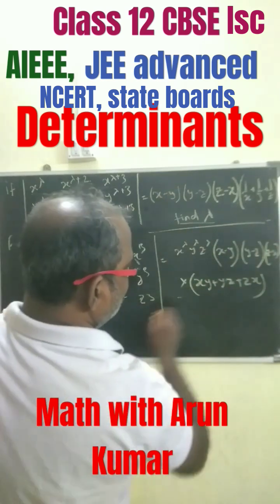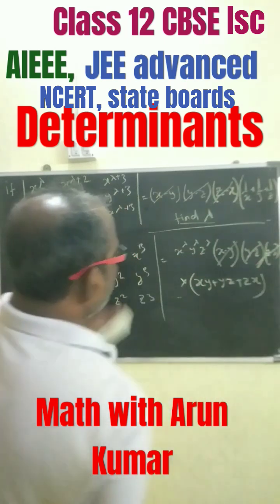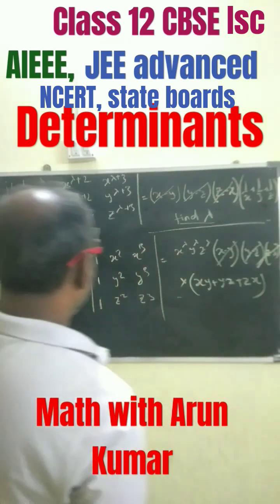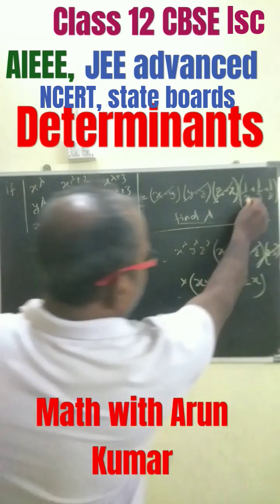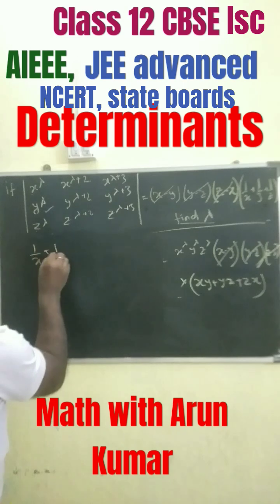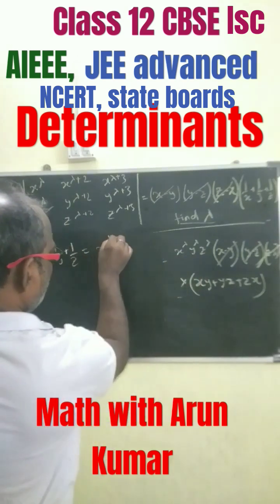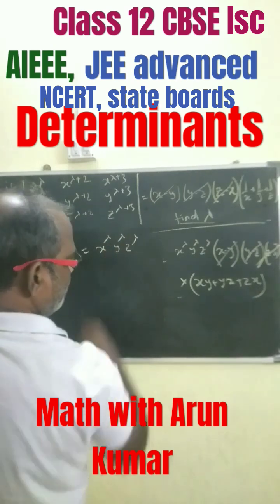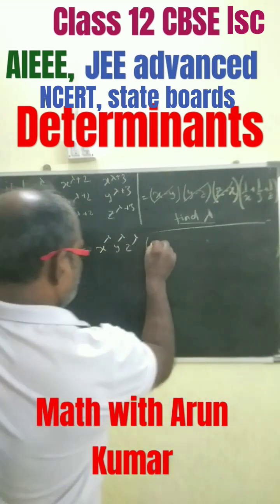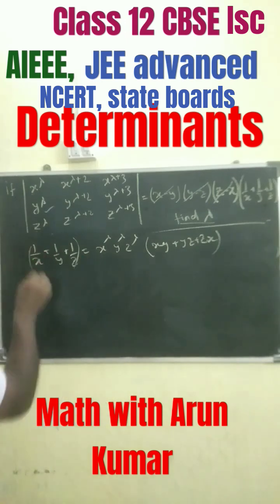Since this is given, on comparing both sides, the common factors cancel. What is left is that 1/x plus 1/y plus 1/z equals x to the power of lambda times y to the power of lambda times z to the power of lambda, into (xy plus yz plus zx).